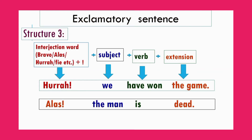Structure 3: interjection word like bravo, alas, hurrah, oh, etc., then exclamation sign, then subject + verb + extension. Such as: 'Hurrah! We have won the game.' 'Alas! The man is dead.' In structure 3, after interjection words, we put an exclamation mark.